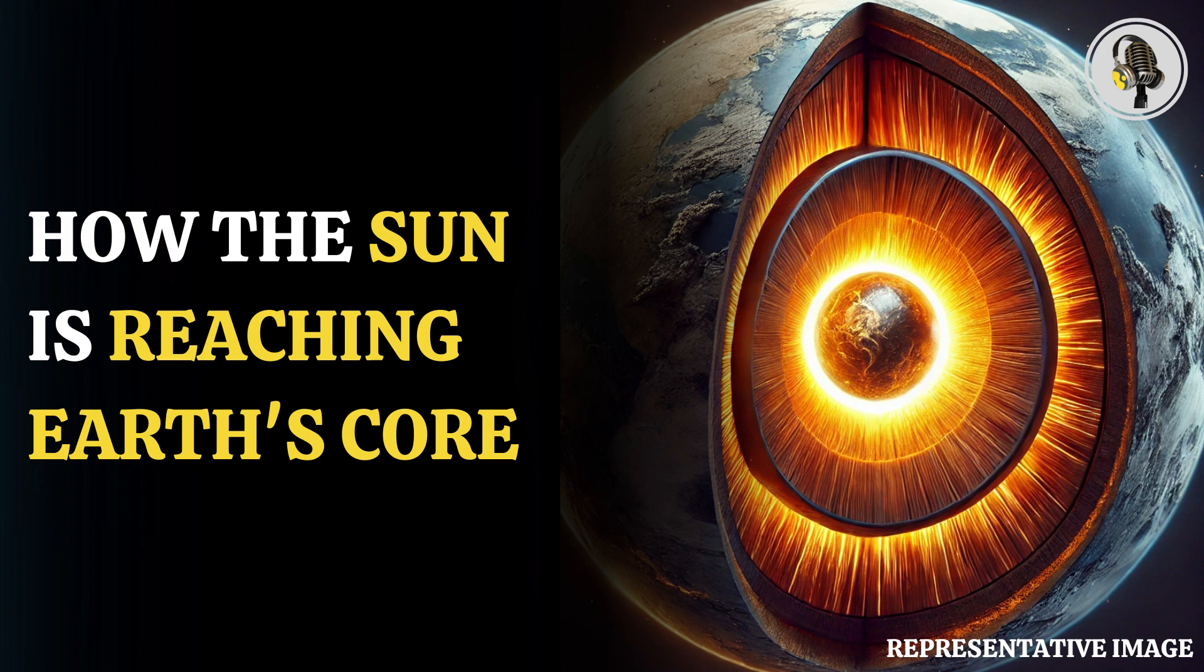In a new paper, which was published in the journal Nature Communications, scientists explained how the ancient magma present inside the Earth's core has some chemical properties that show it is being impacted by the Sun's rays.